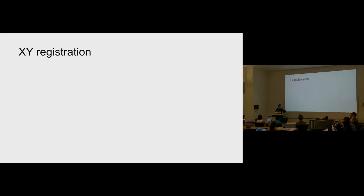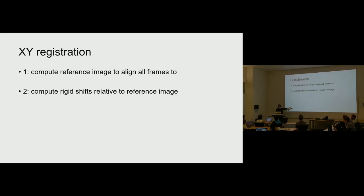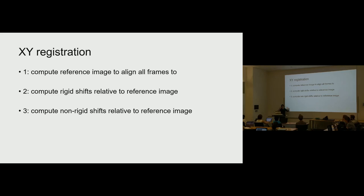For XY registration, the first thing we need is a reference image to align all of our frames to in our movie — a target to which every frame will be shifted. Next, we compute the shifts relative to this reference image for all images across time. Then we compute non-rigid shifts, which I highly recommend for all recordings — we divide the field of view into blocks and register each block separately. Finally, we'll talk about benchmarking results using tools inside the GUI.